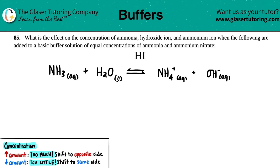Number 85: What is the effect on the concentration of ammonia, hydroxide ion, and the ammonium ion when the following are added to a basic buffer solution of equal concentrations of ammonia and ammonium nitrate?